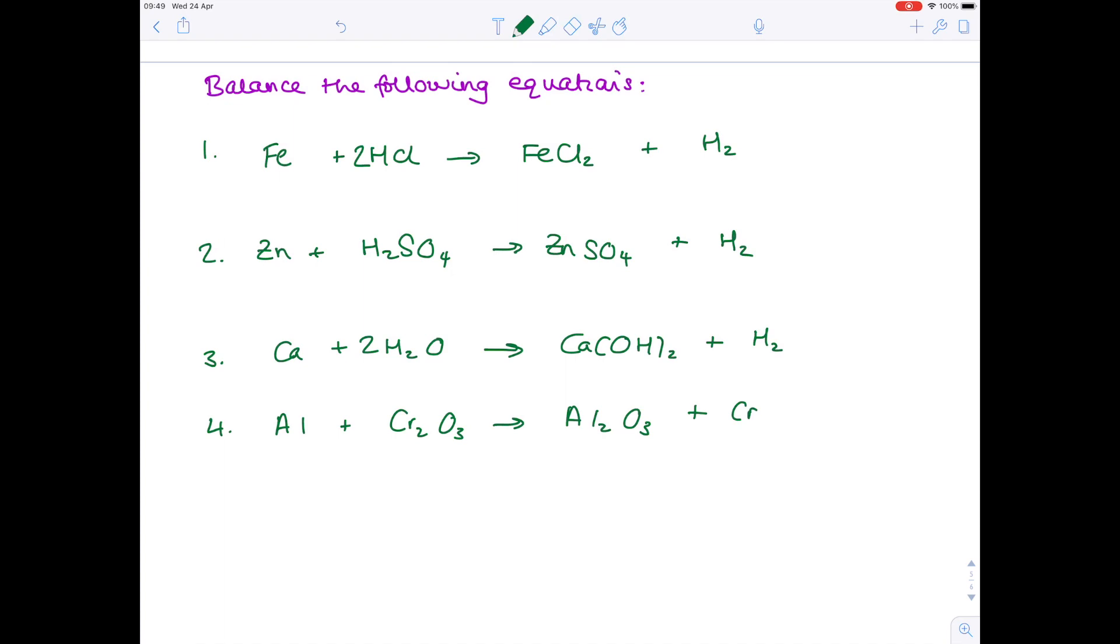Getting more complicated now. I can immediately see that my aluminiums aren't balanced. So I'm going to put a two there. We've got issues with chromium because we've got two on the left hand side, only one on the right hand side. So I'm going to put a two there. Double check. Two aluminiums is correct. We've got two chromiums. That's correct. Three oxygens. Yeah, that's right.